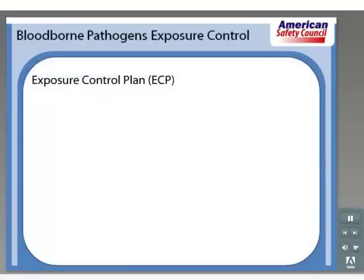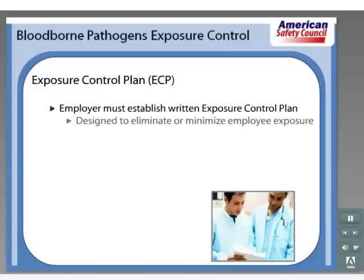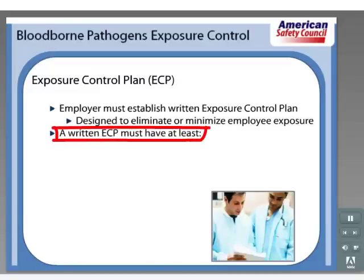Each employer having an employee with occupational exposure, as defined by OSHA standards, must establish a written exposure control plan designed to eliminate or minimize employee exposure. The exposure control plan must contain at least the following elements.